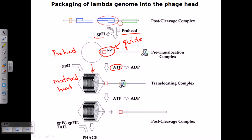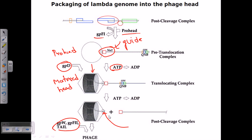Maturation of the head occurs simultaneously during packaging, and packaging initiation is important for further modifying the prohead into the matured head. As packaging proceeds with ATP hydrolysis providing energy, when it reaches the terminal cos site it is cleaved there. Proteins GpD, GpW, GpFII, and other tail proteins then attach, finally providing the mature phage progeny particles. This packaging continues from one cos site to the next, which is how the phage knows the correct amount of DNA to package.